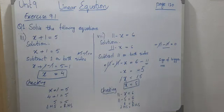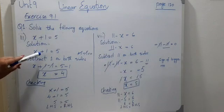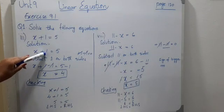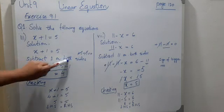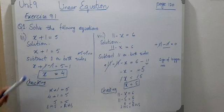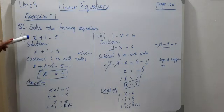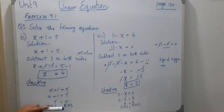From exercise 9.1: x plus 1 equals 5. The opposite of plus 1 is minus 1, so we subtract 1 on both sides. The answer is x equals 4. We put this value in the main equation: 4 plus 1 equals 5. Left hand side equals right hand side, so our linear equation is true.